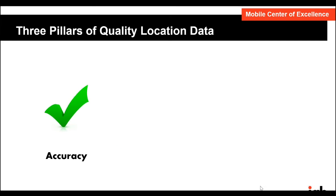The three pillars of quality location data: first, accuracy. Accuracy refers to the mobile user's true real-time location at the time of an ad call relative to the location passed from the publisher to the ad platform. You want it to be accurate. Obviously if it's not accurate there's no real benefit to the advertiser, and the ad that comes through to the end user will also not be a good experience for them.